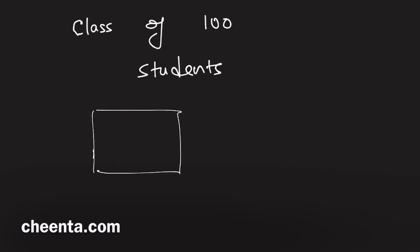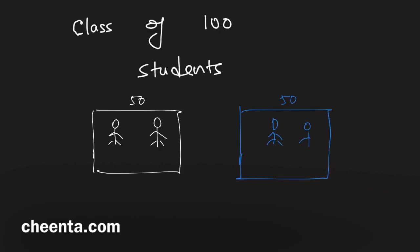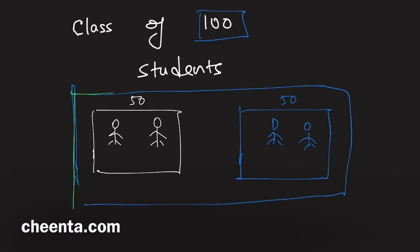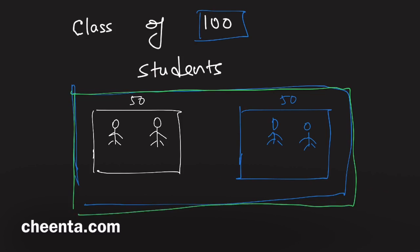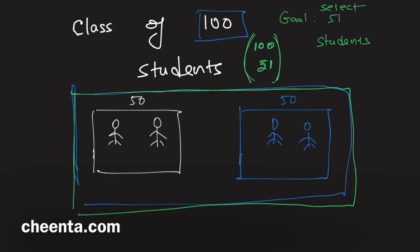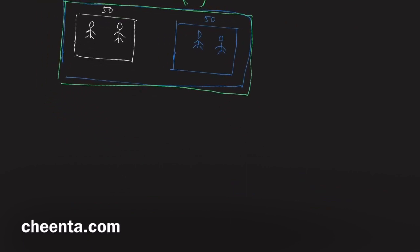The class of 100 students is divided into two sections: Section 1 has 50 students and Section 2 has another 50 students. You want to select 51 students from this class of 100. One way to do this is simply 100 choose 51 — that's the number of ways of choosing 51 kids from all 100. Or you can use the two sections and do it the hard way.